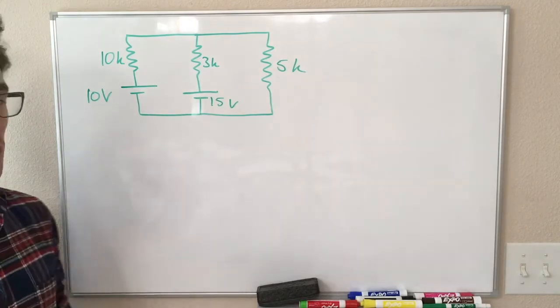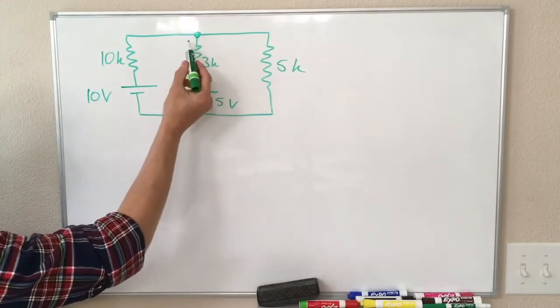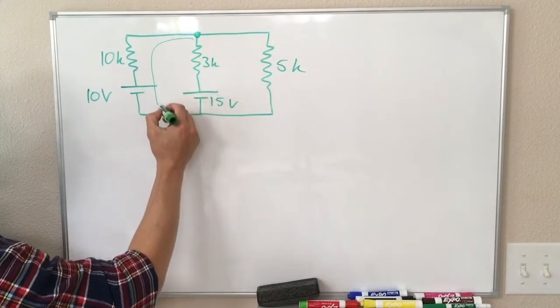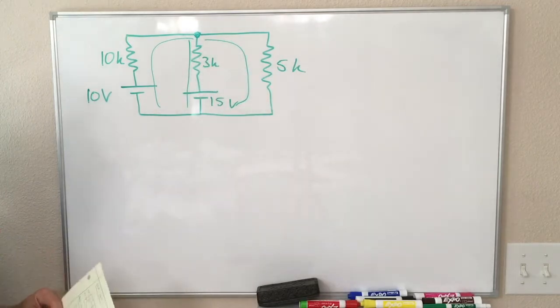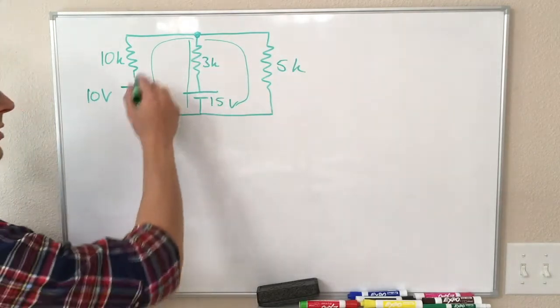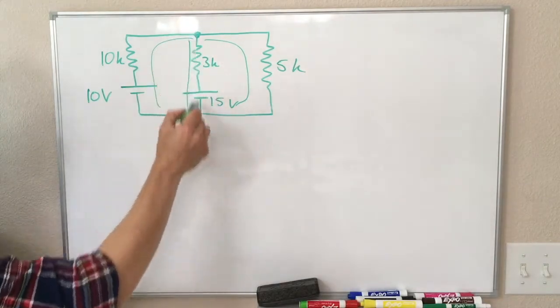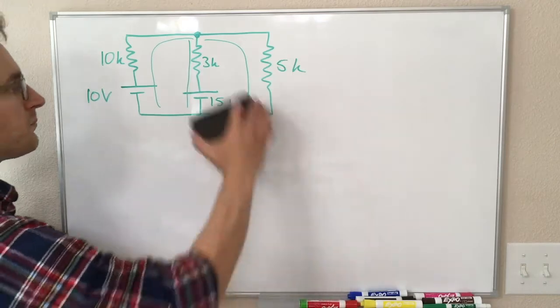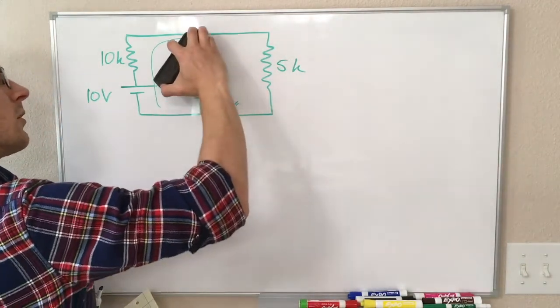So first thing we do is to split this into branches. So from this point at the top, we have a few different branches of our circuit, right? Offhand we might not know if current's going to be going up or down, but you can see there are three ways that current can get from the top of this picture to the bottom of the picture. So I'm going to switch colors before I start drawing too much on here.